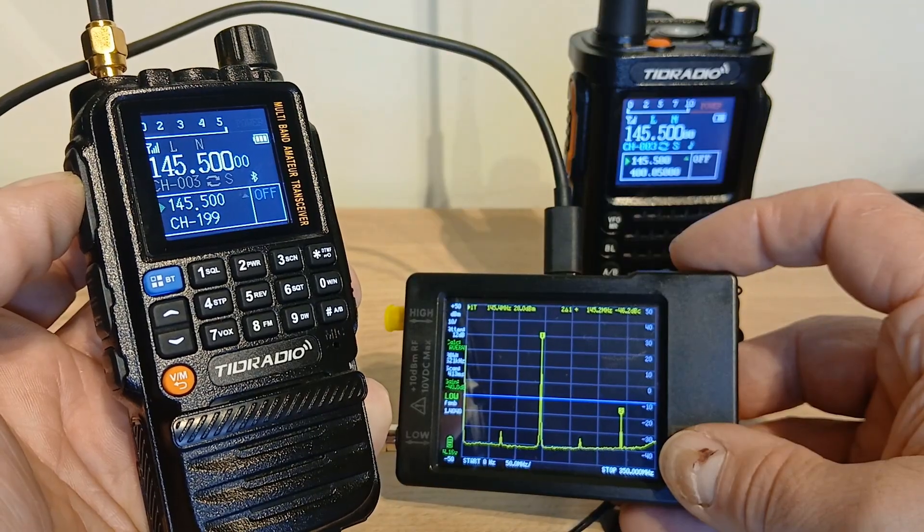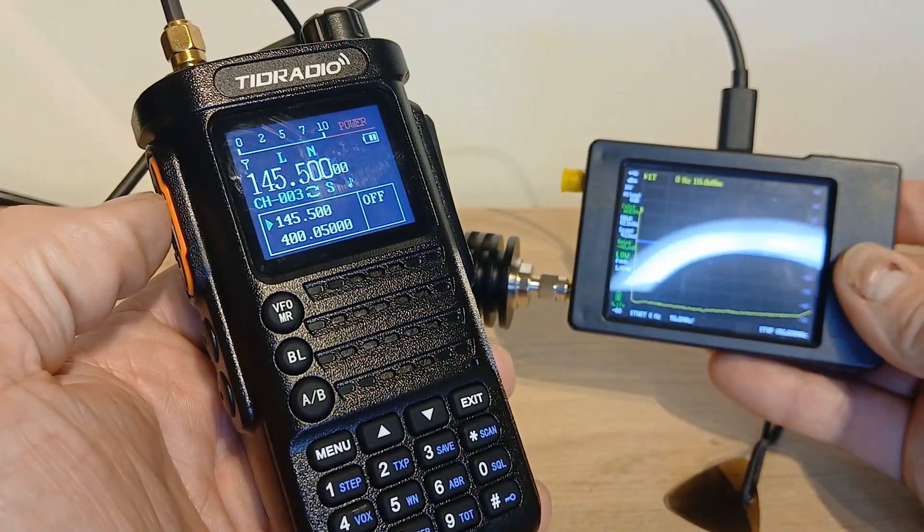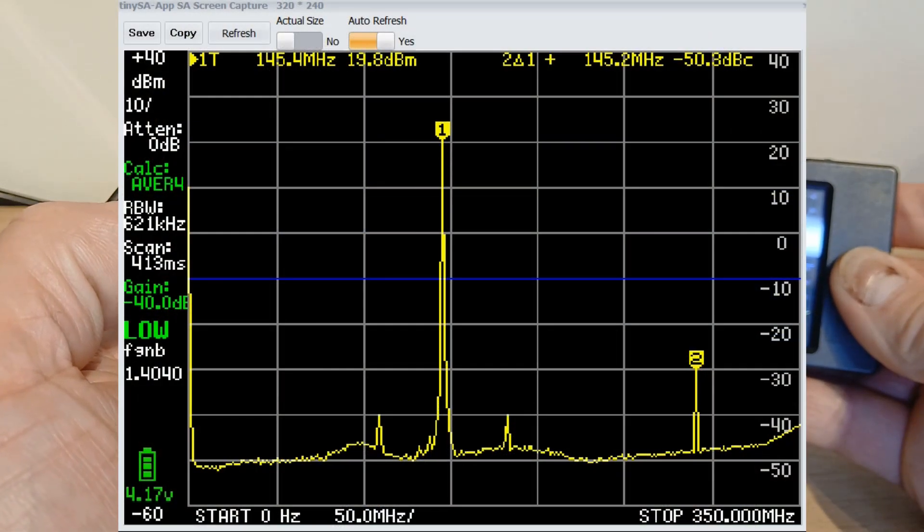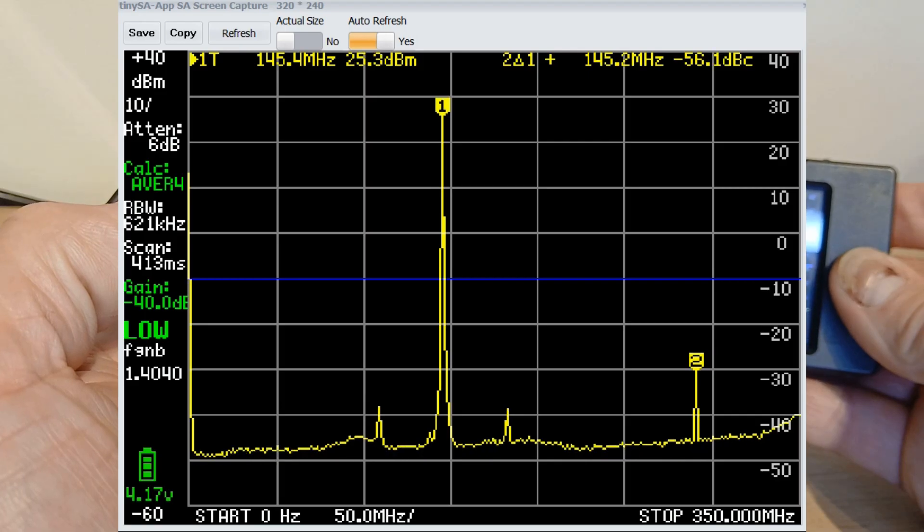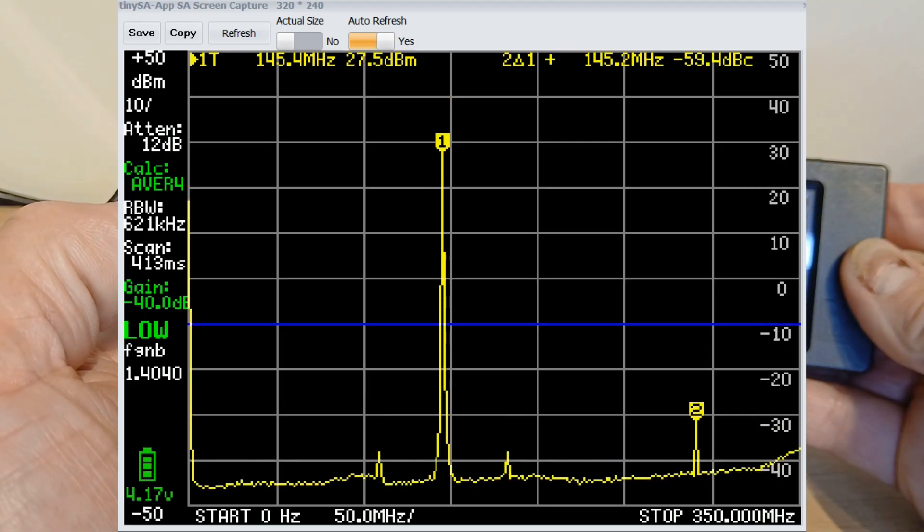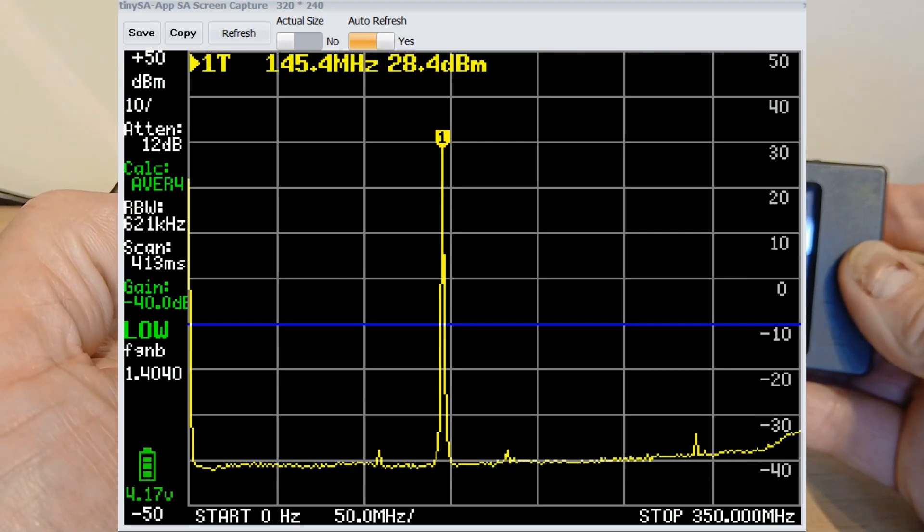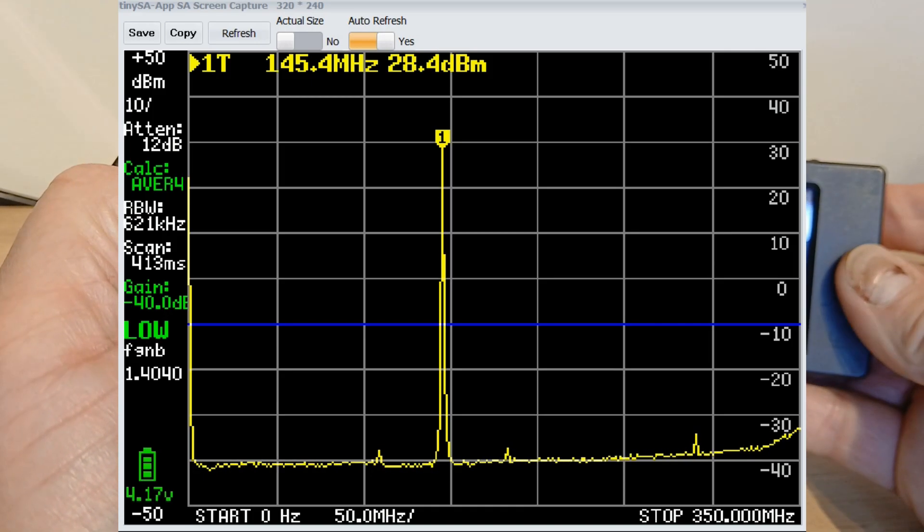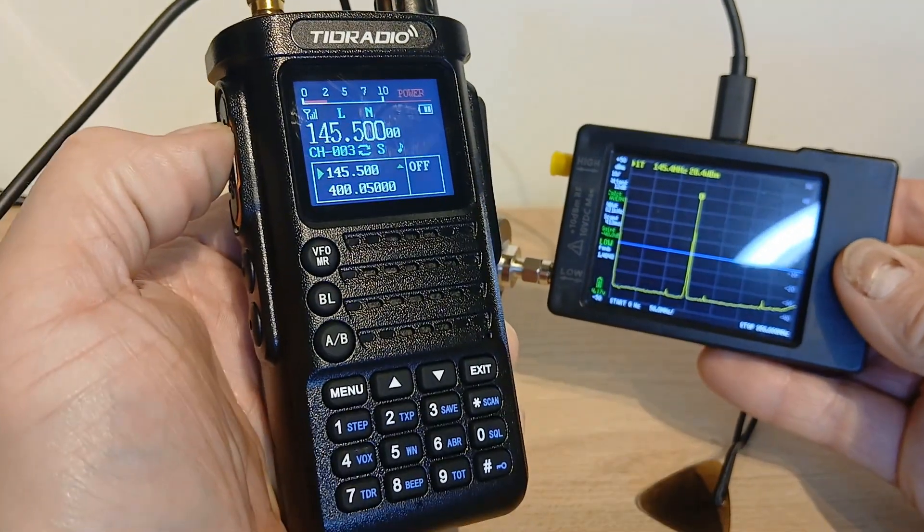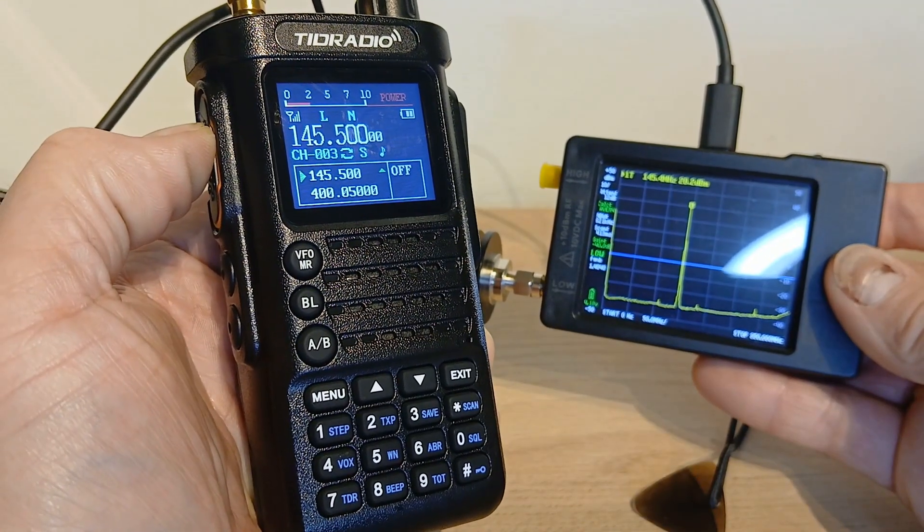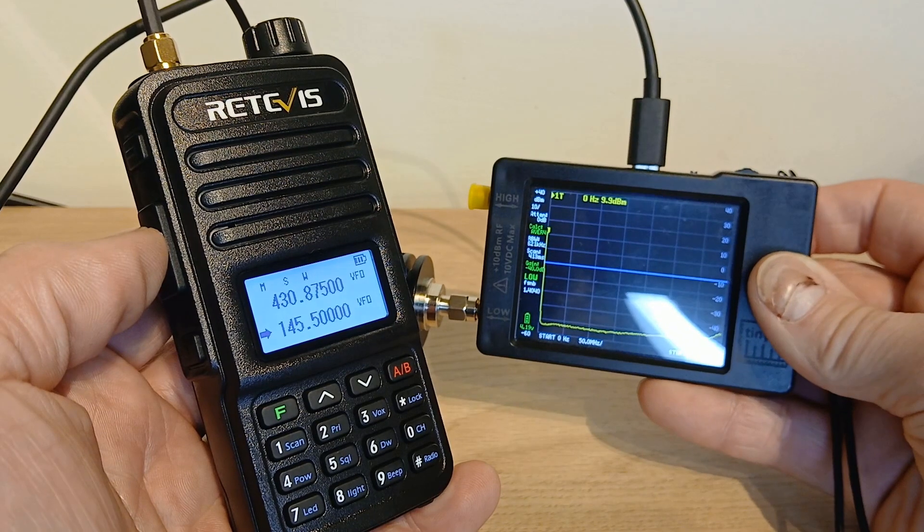Let's try the TDH8. And as we let the TDH8 settle down, you can see that the harmonic has pretty much disappeared altogether. So a really, really clean signal and 100% pass by the TID radio TDH8. So yeah, really pleased with that one. Again, another one of my favorites I think is the TDH8.